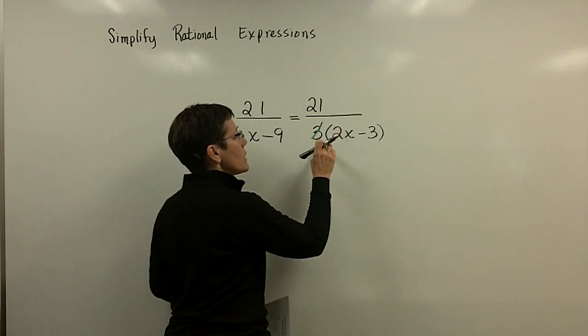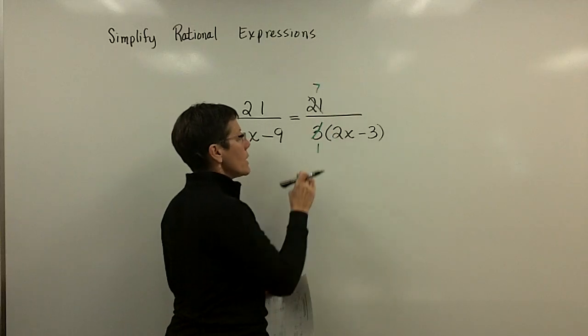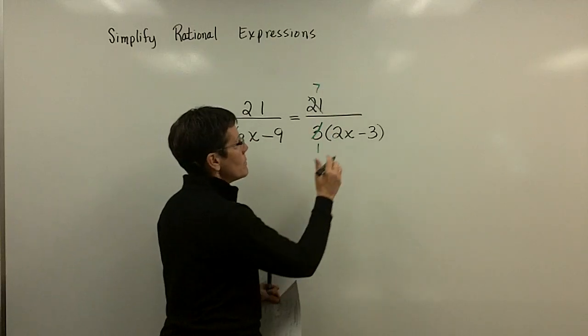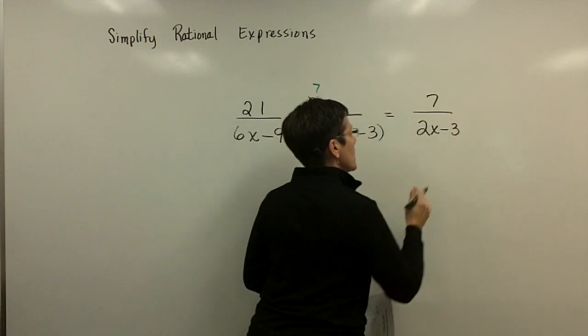But it's just as easy to say that 3 goes into the number 3 once, and 3 goes into 21 seven times. And my result here, then, is in the numerator 7 over 2x minus 3.